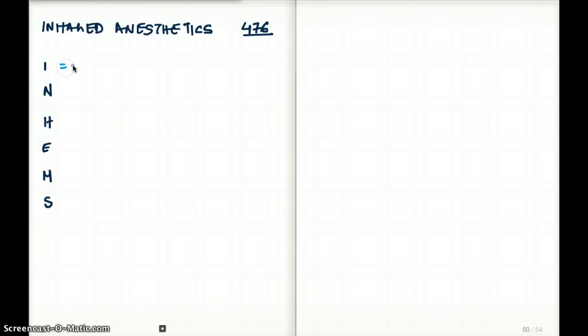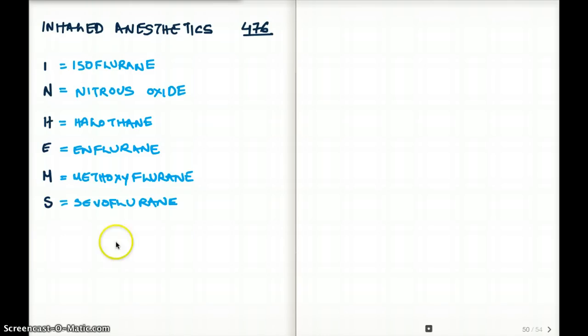I is for isoflurane. N is for nitrous oxide. H is for halothane. E is for enflurane. M is for methoxyflurane. And S is for sevoflurane. So those are the different kinds of inhaled anesthetics that includes a lot of them.